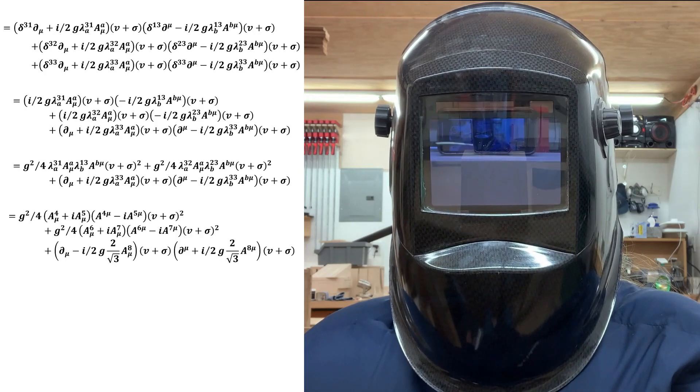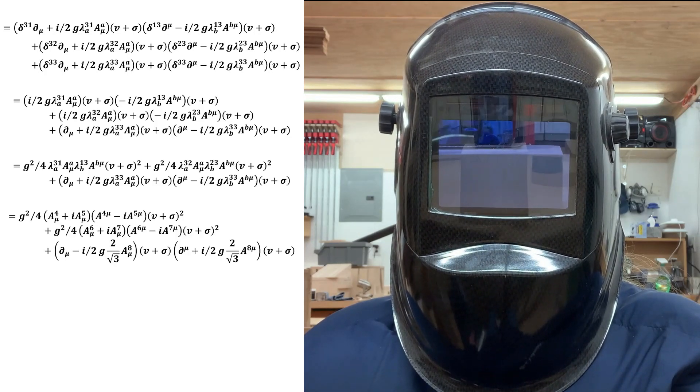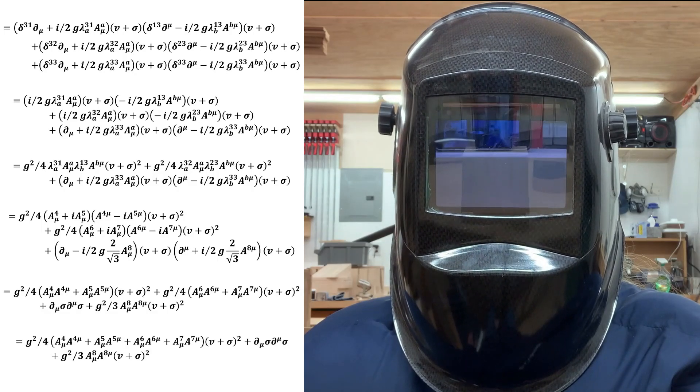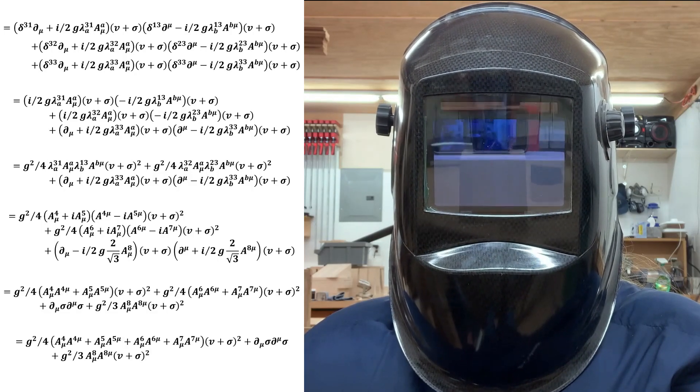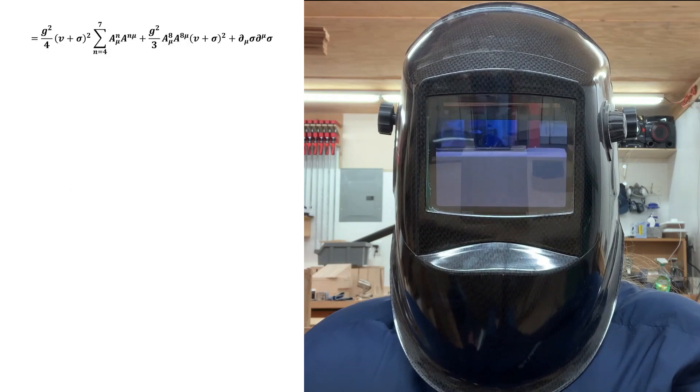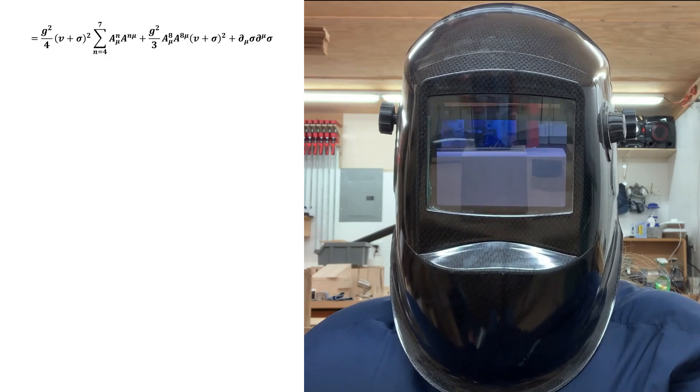The next step is to expand out the a and b sums, inserting the generator component values, and then simplifying again. At this point, it's useful to introduce this sum to manage the repetitive terms.